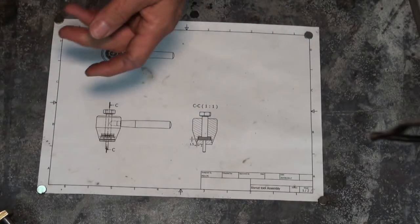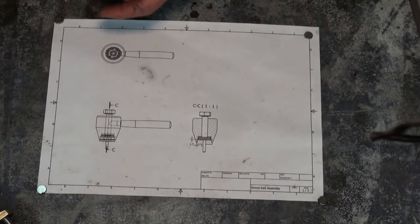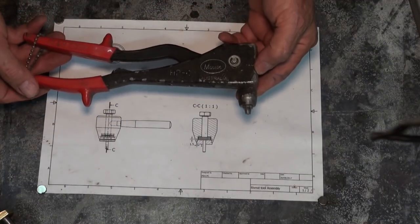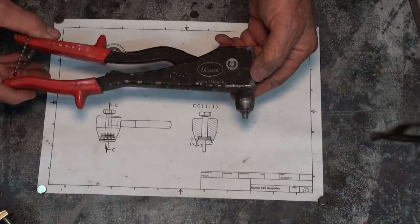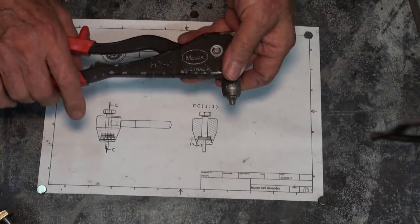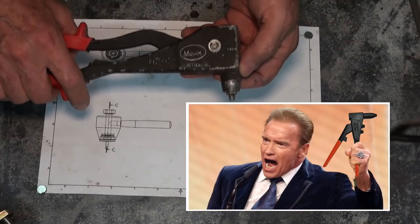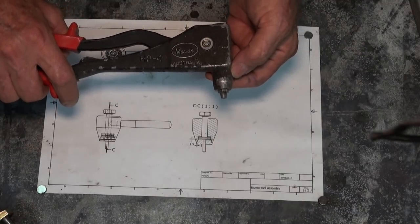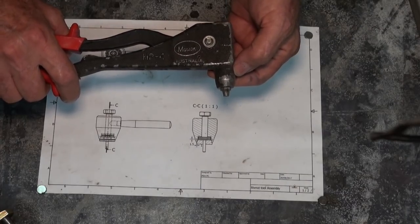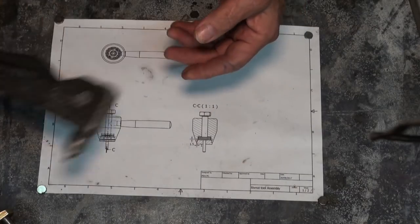The other type that's commonly available is similar to this type that you use for fitting pop rivets or blind rivets. These are way, way cheaper. But when I had a look at them, I'm pretty sure you'd need to be built like Arnold Schwarzenegger in order to be able to pull these rib nuts up tight and form the flange. So I declined to buy one of those.